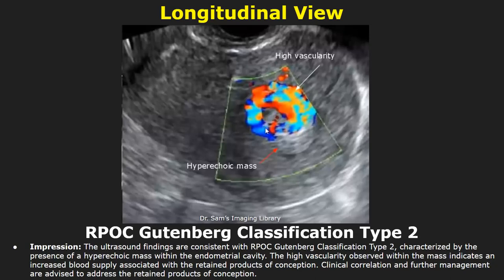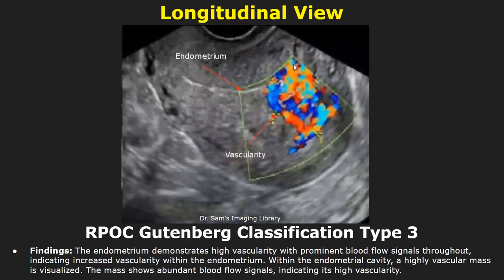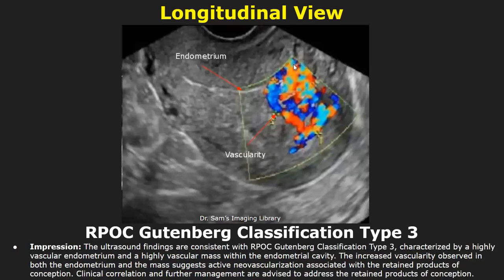In the findings of a type 3 RPOC, there is increased vascularity noted within the endometrium as well as increased vascularity within the hyperechoic mass. You can write these findings in the impression and then write about clinical correlation.